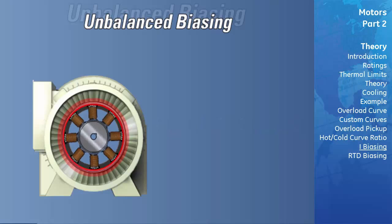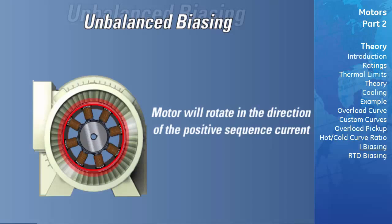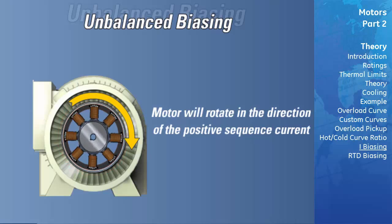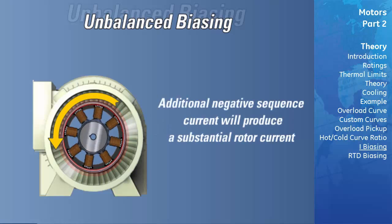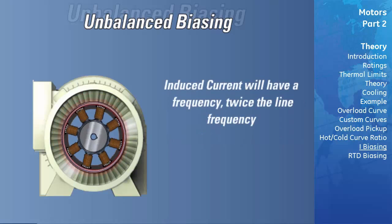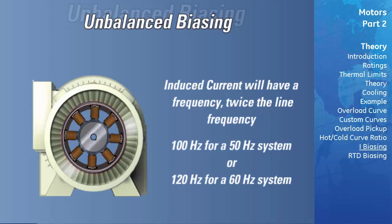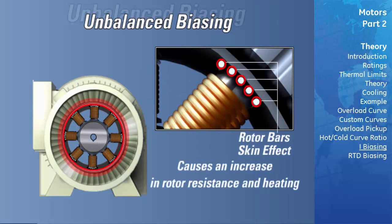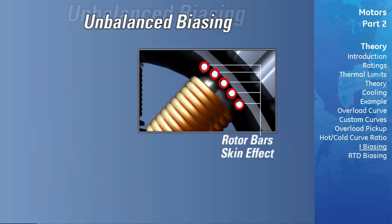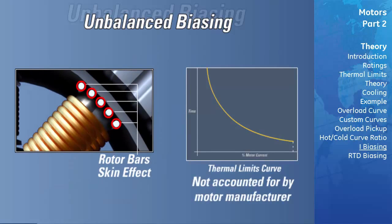When the motor is running, the rotor will rotate in the direction of the positive sequence current at near-synchronous speed. Negative sequence current, which has a phase rotation opposite to the positive sequence current and hence opposite to the rotor rotation, will generate a rotor voltage that produces substantial rotor current. This induced current will have a frequency approximately two times the line frequency — 100 Hz for a 50 Hz system, or 120 Hz for a 60 Hz system. Skin effect in the rotor bars at this frequency will cause a significant increase in rotor resistance and therefore a significant increase in rotor heating. This extra heating is not accounted for in the thermal limit curves supplied by the motor manufacturer, as these curves assume positive sequence currents only from a perfectly balanced supply.